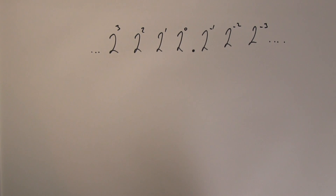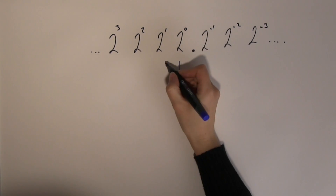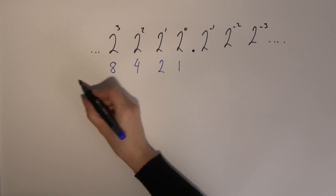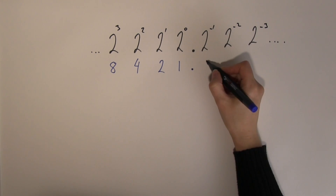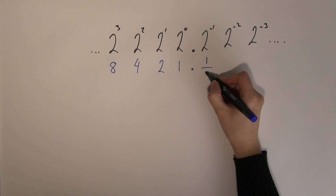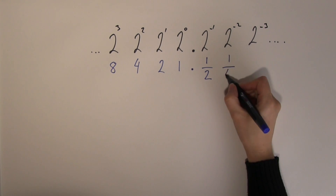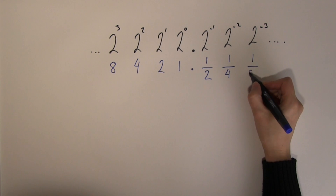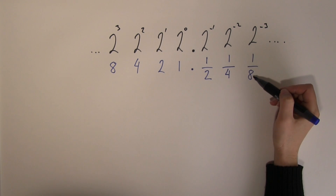The place values to the left of the radix point are one, two, four, and eight. Two to the minus one is one over two, two to the minus two is one over four, and two to the minus three is one over eight. Going from right to left the place value doubles, and going from left to right it halves: half of eight is four, half of four is two, half of two is one.